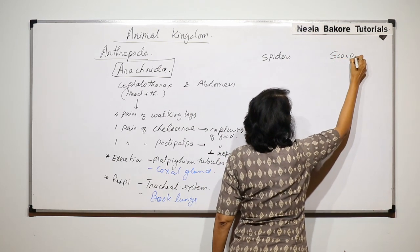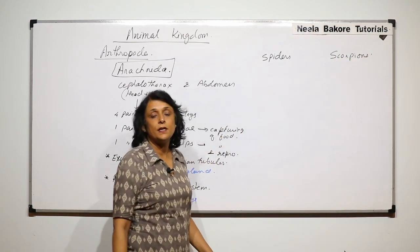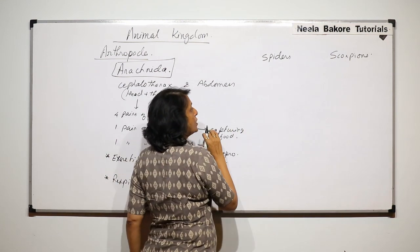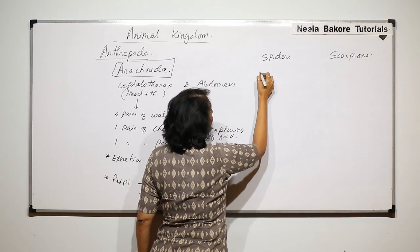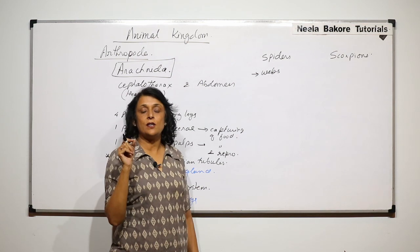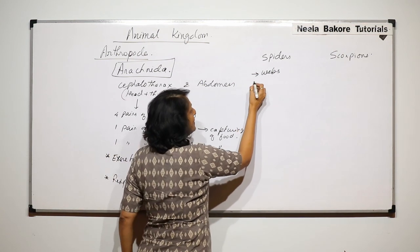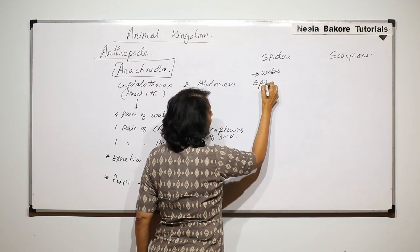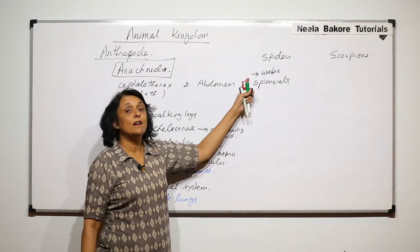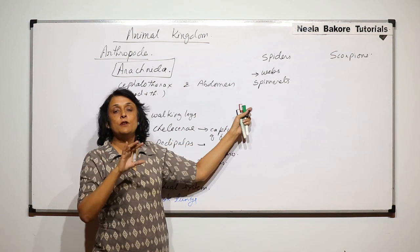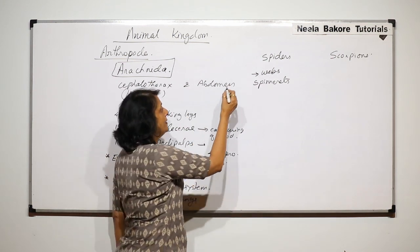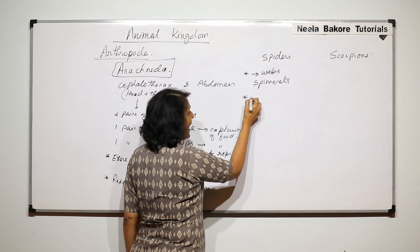Two examples are spiders and scorpions. The basic characteristics of both are similar, with some additional features. In case of spiders, they spin webs. The slimy thread-like structure that forms the web is released from glands known as spinnerets, which are present in the abdominal region. The prey gets entangled in the web and the spider feeds on it.